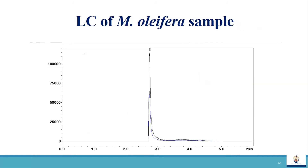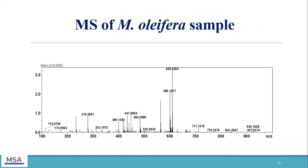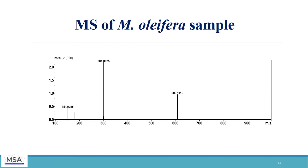This is the LC-MS data for the Moringa oleifera sample, where we can see the fragment of rutin, which is the quercetin aglycone. This is the MS spectrum of rutin, where you can see the parent mass at m/z 609, which is representative of the presence of rutin. And this is the fragmentation pattern, which shows that rutin fragments to the quercetin aglycone.